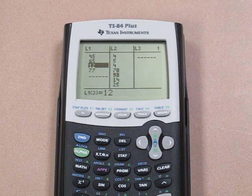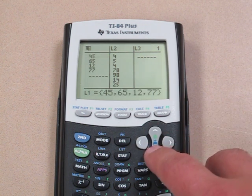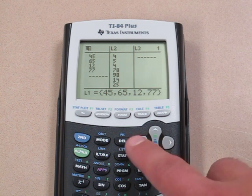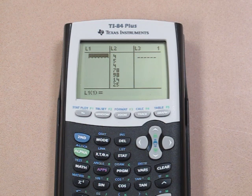If we want to remove an entire list, we scroll up to where it says L1 and press CLEAR and the down button. Now list 1 is clear.